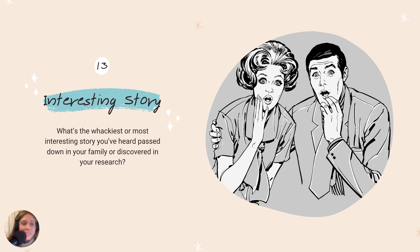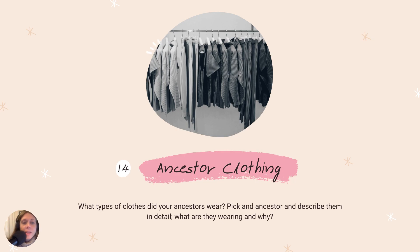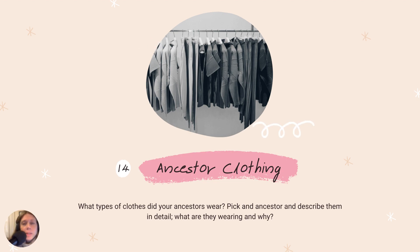Interesting story — pretty self-explanatory. Go ahead and write down something crazy you've uncovered or something you've heard your whole life. Ancestor clothing is also great, especially if you're into fashion. Describe the stitching, describe touching their sleeve — what would that material feel like, what would it sound like? You can really get into some detail here. You may not use it all in your story, but it really gets the writer's mind going.